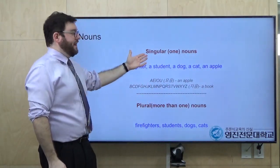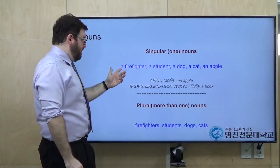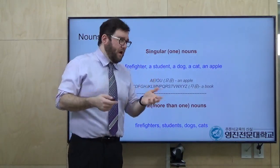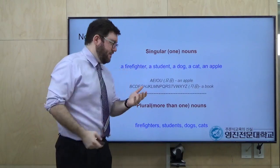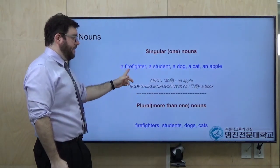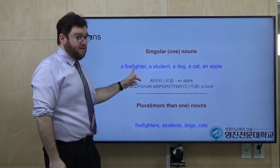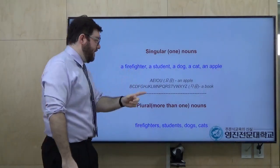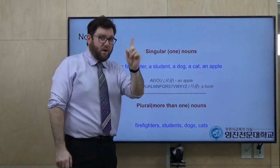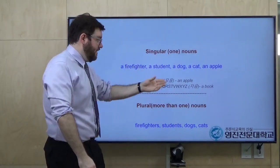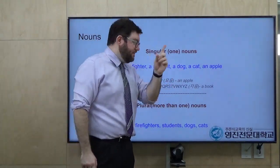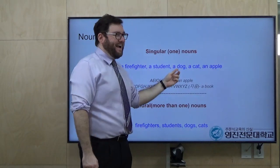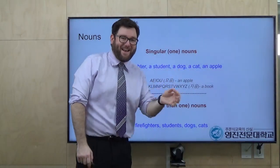When we look at singular nouns, we always have to count — 항상 셀 수 있어요. For example: a firefighter — one firefighter. A student — 한 학생. A dog — 한 마리.